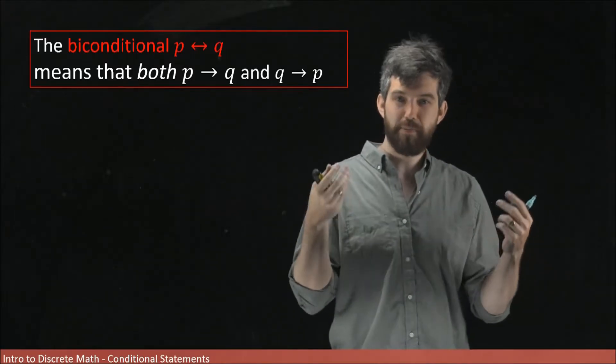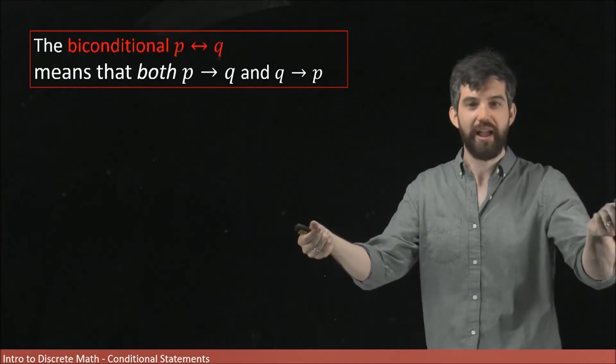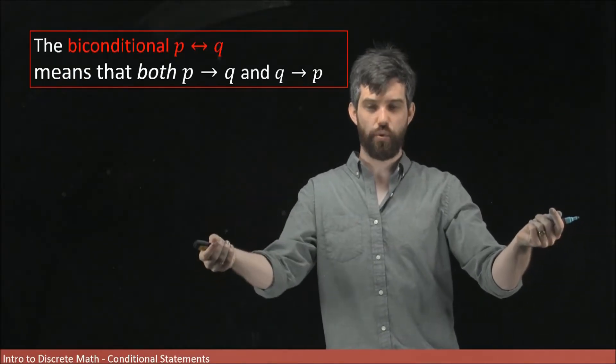This is the idea where P and Q are sort of like equivalent properties. If you have one, you get the other, and if you have the other, you get the initial one.